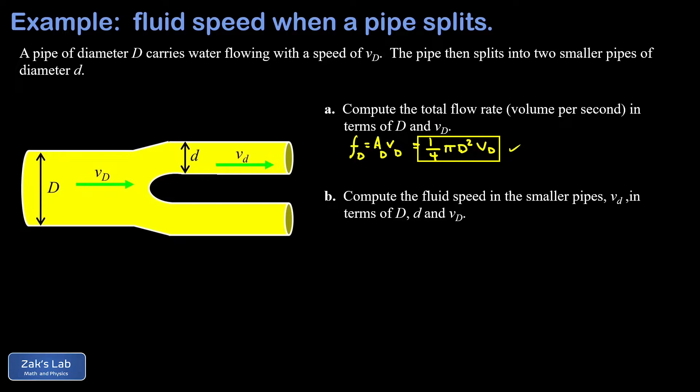Now we want the fluid speed in the smaller pipes. What I'm going to do is express the flow rate in one of these pipes in terms of the cross-sectional area and the fluid speed, and I'm going to call that f_d. That's equal the cross-sectional area of a small pipe times the fluid speed in the small pipe.